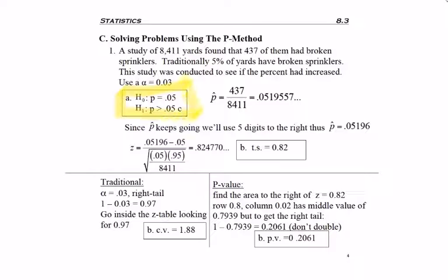So first I needed to find H₀ and H₁, and because it says the study was conducted to see if, so it doesn't say test the claim, but that is what we're doing, is we're seeing if the percent has increased. So I want p is greater than, which I have to use p equals in H₀.